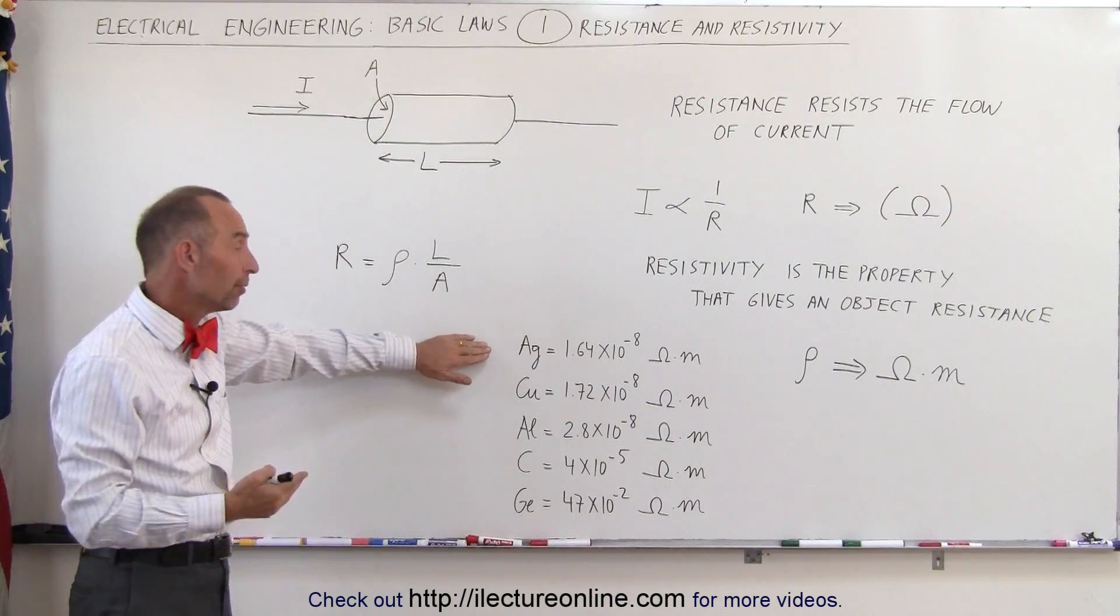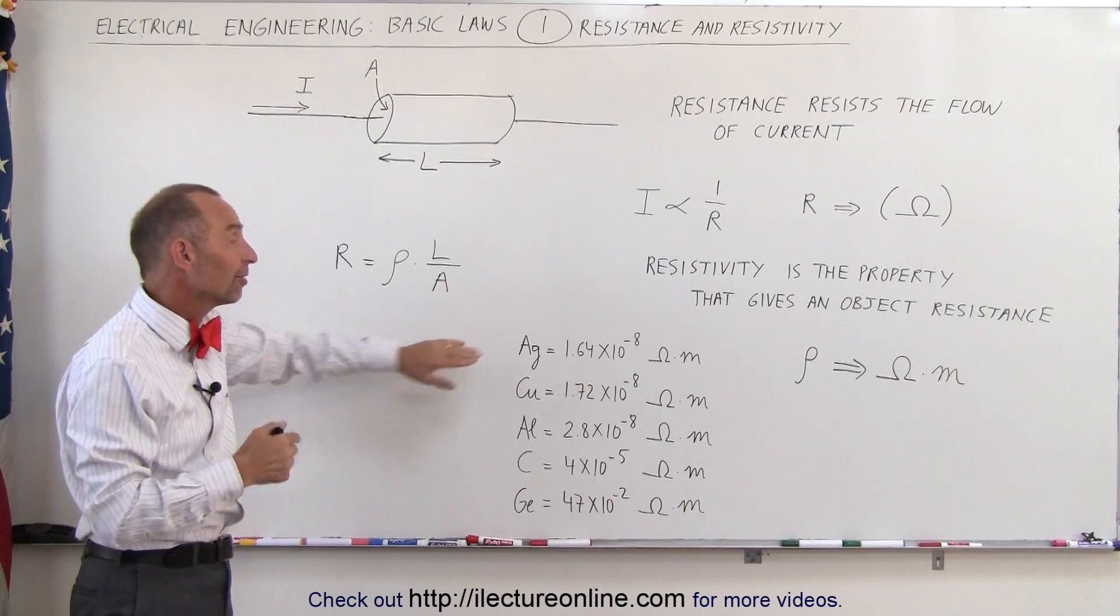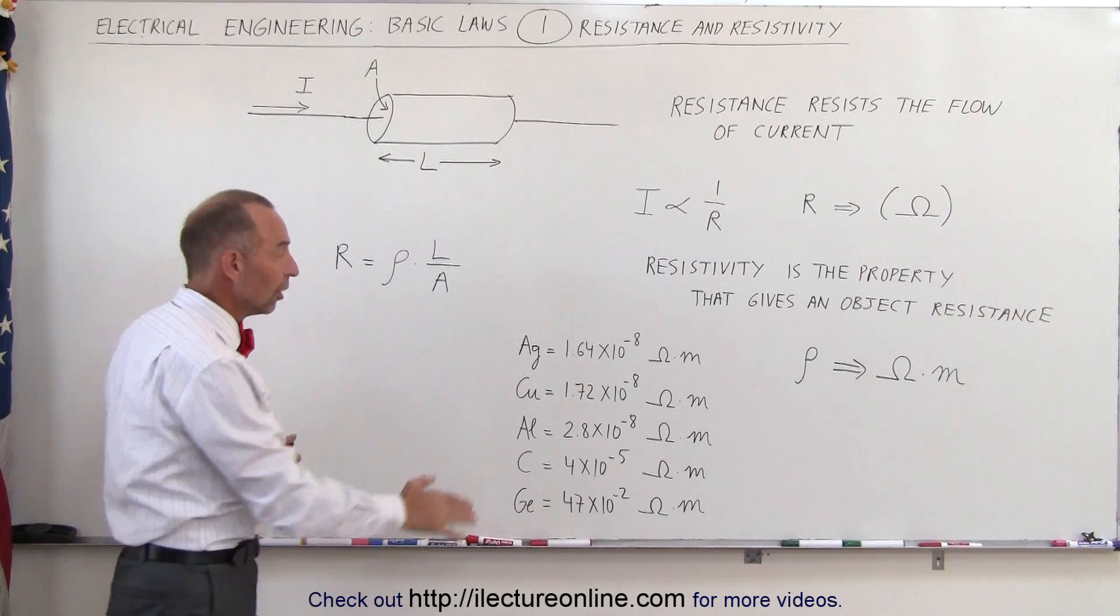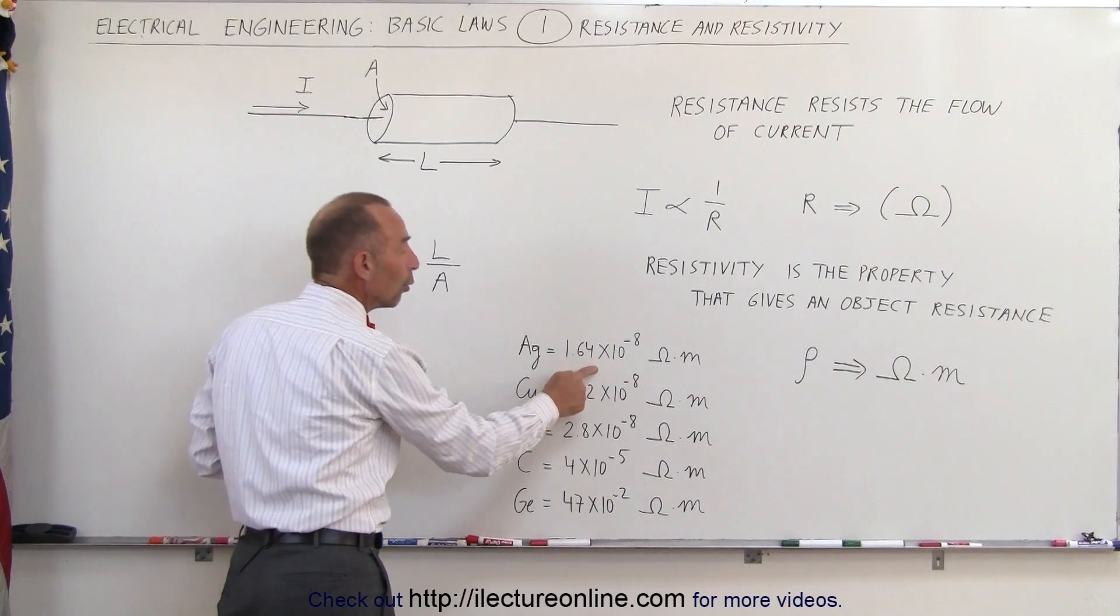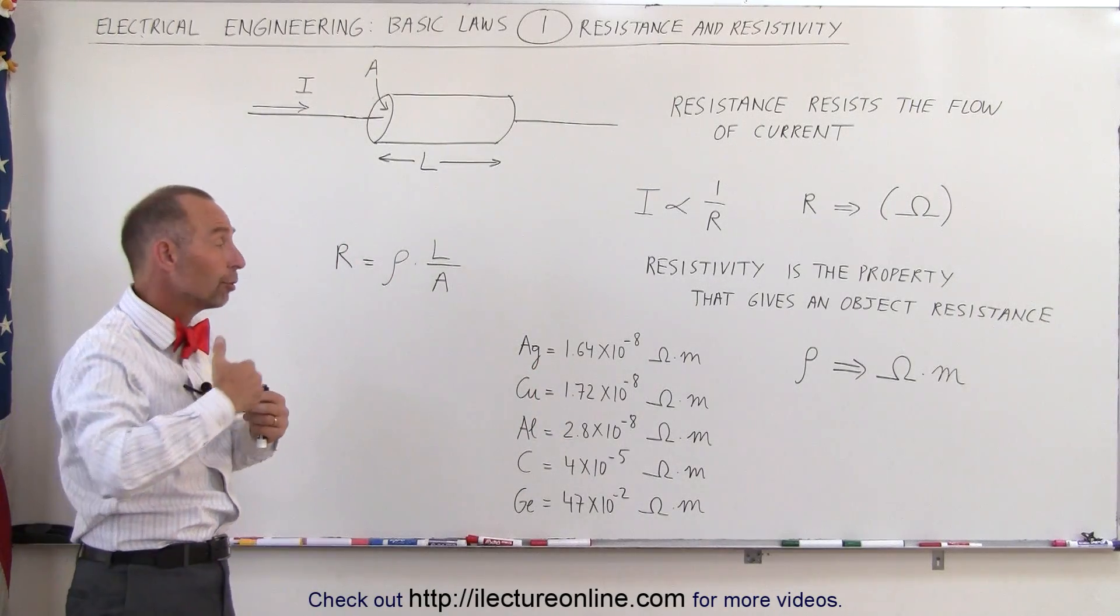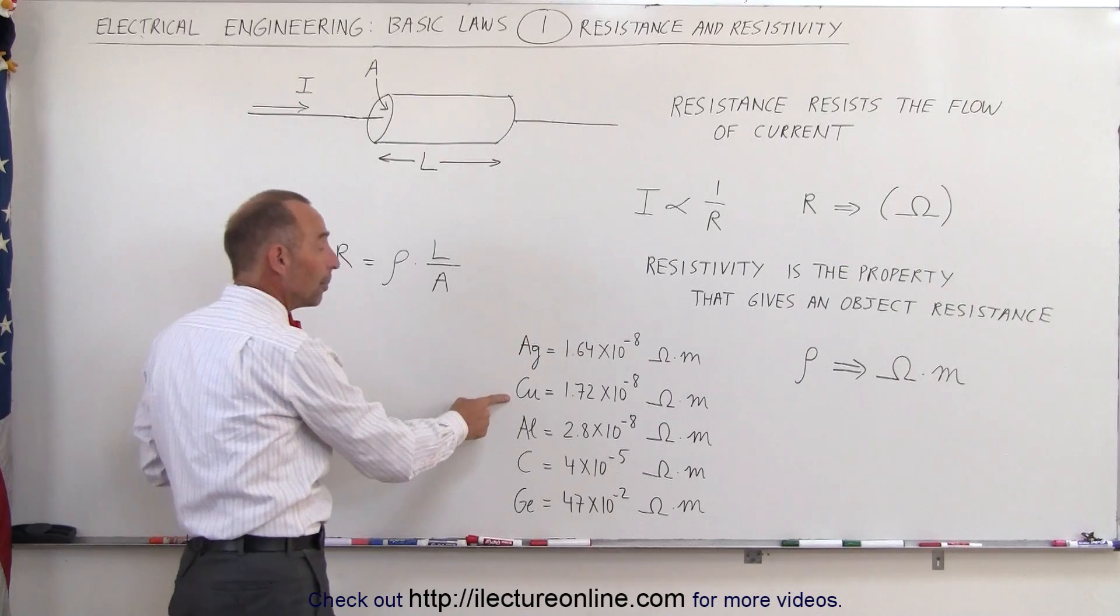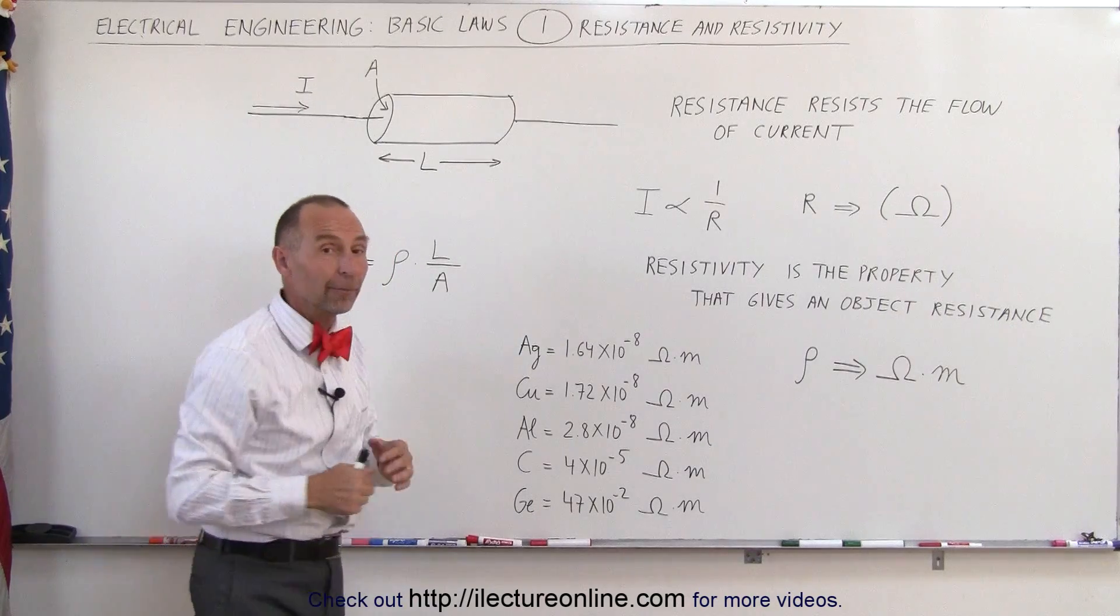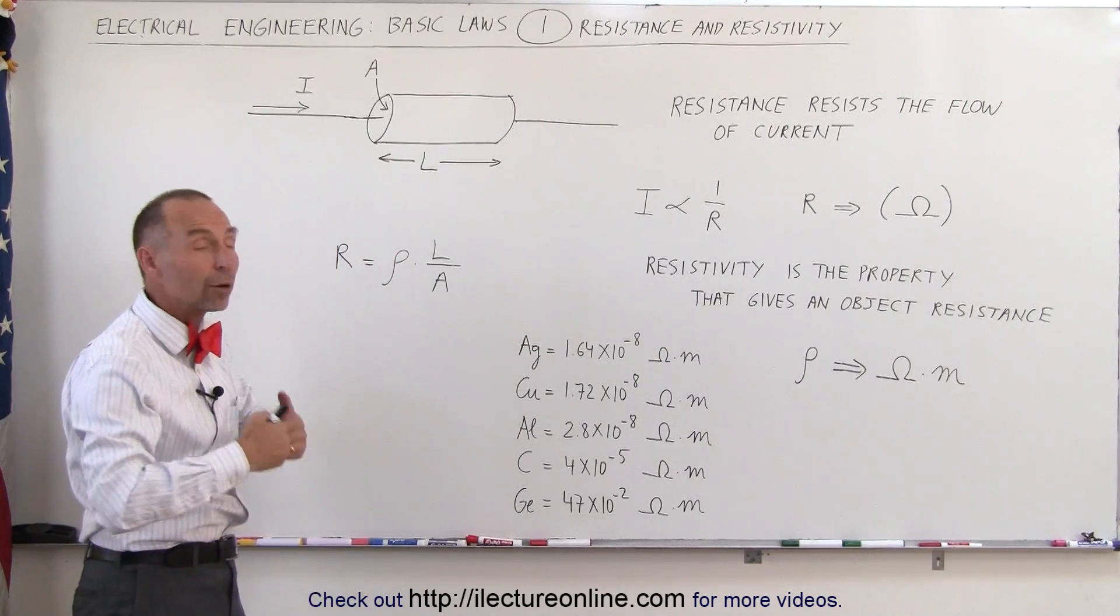To get a feel of the type of resistivities we have in different materials, notice silver has a very low resistivity, meaning it allows the current flow to be very high. So is copper. Copper and silver are primary substances that allow current to flow.